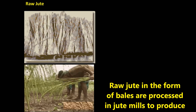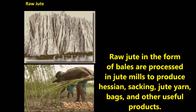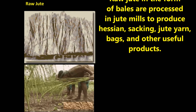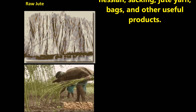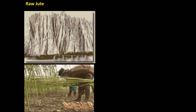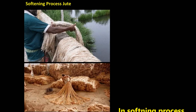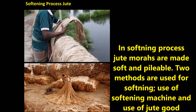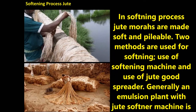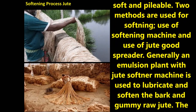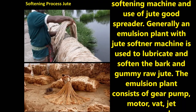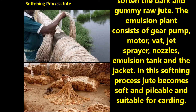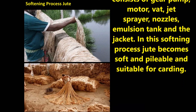Manufacturing process of jute yarn: Raw jute in the form of bales is produced in jute mills to produce hessian, sacking, jute yarn, bags, and other useful products. Raw jute bales from jute fields or suppliers are carried by trucks and unloaded, then stacked in jute mill godowns. In the softening process, jute mahas are made soft and pliable using two methods: a softening machine and a jute spreader. An emulsion plant with a jute softener machine is used to lubricate and soften the bark and gummy raw jute. The emulsion plant consists of a gear pump, motor, vat, sprayer nozzles, emulsion tank, and jacket.